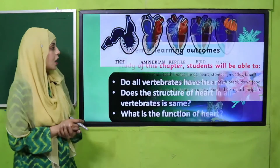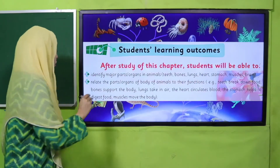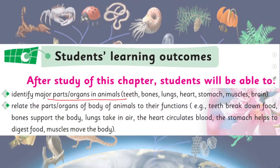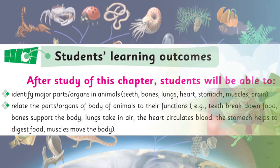In today's lecture, students will be able to identify major parts and organs in animals. We are going to discuss the heart and stomach. Students will also be able to relate the parts and organs of the body of animals to their functions — just like the heart circulates blood, the stomach helps to digest food.